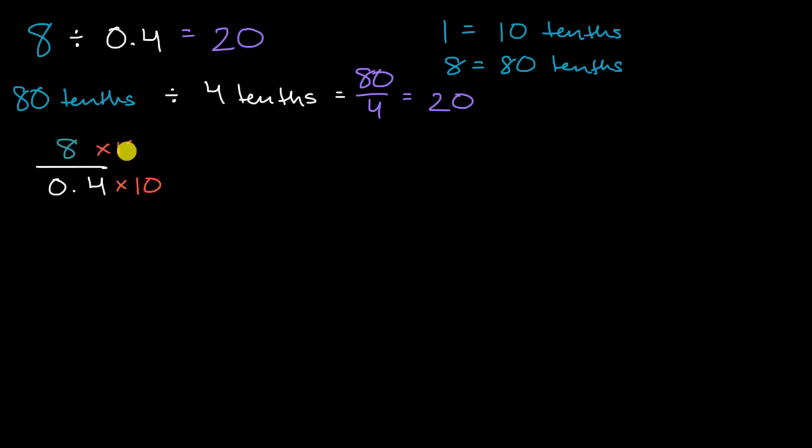Well, I could multiply the denominator by 10, and if I don't want to change the value of the fraction, I have to multiply the numerator by that same amount. Well, what does that get us? Well, this is going to be equal to, in the denominator right over here, I'm just going to have a four. So we got rid of the decimal. And in the numerator, I am going to get 80. So once again, we get 80 over four, which is equal to 20.